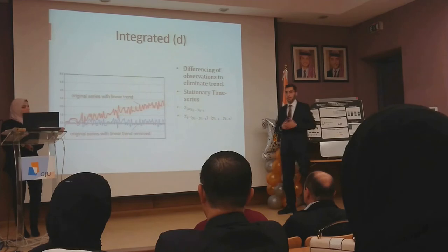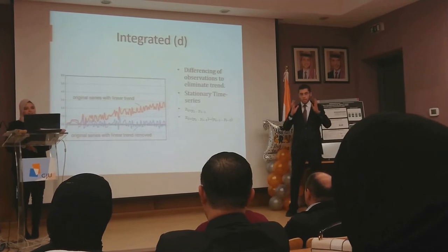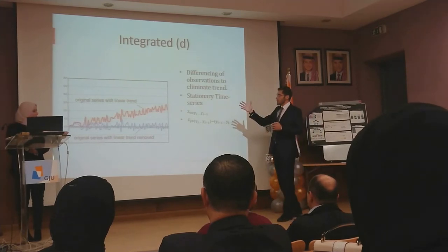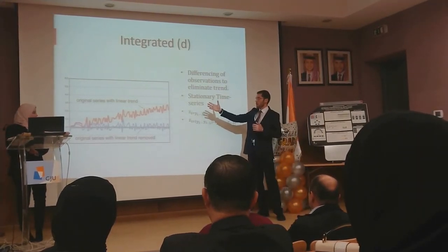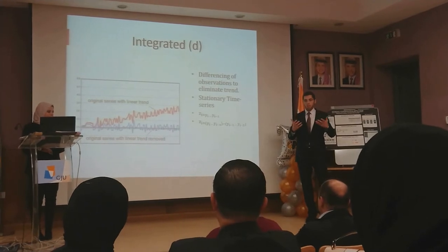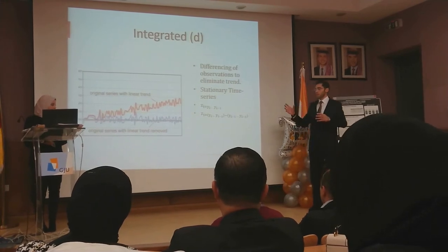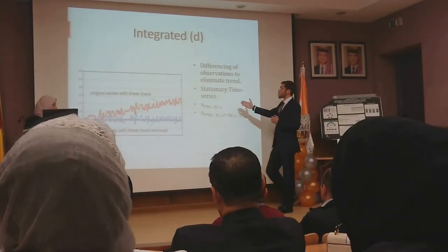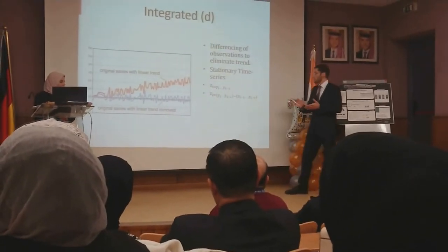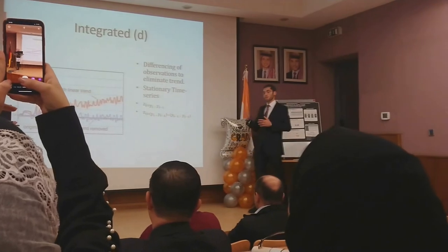We arrive at the second part of ARIMA: I, which stands for Integrated. It simply implies differencing — we take the current observation and subtract the previous one. This transforms data that may have a trend into data that is stationary, meaning it has constant statistical parameters such as mean or variance regardless of time. A first order integrated function is simply the first difference, while a second order is the difference of the first difference.